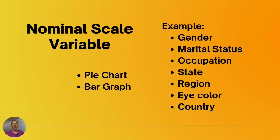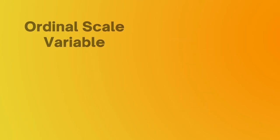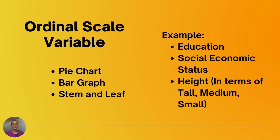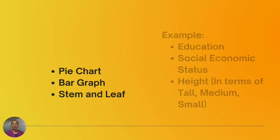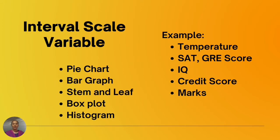If you have measured your variable on a nominal scale, the appropriate graphs are the pie chart and the bar graph. For an ordinal scale variable, the appropriate graphs are the pie chart, bar graph, and stem and leaf.